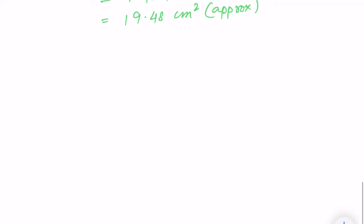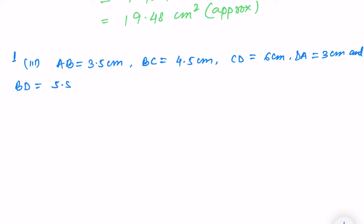Now we are doing exercise 3.2, question number 1, roman numeral 3. AB is equal to 3.5 cm, BC is equal to 4.5 cm, CD is equal to 6 cm, DA is equal to 3 cm, and BD is equal to 5.5 cm. Solution.